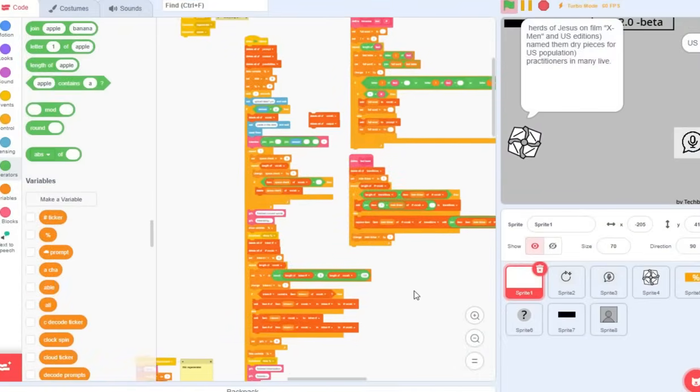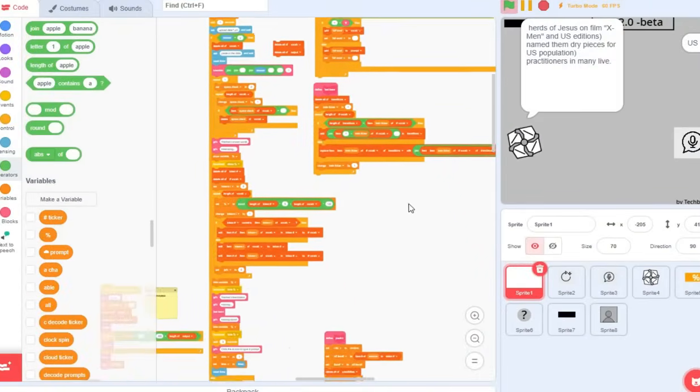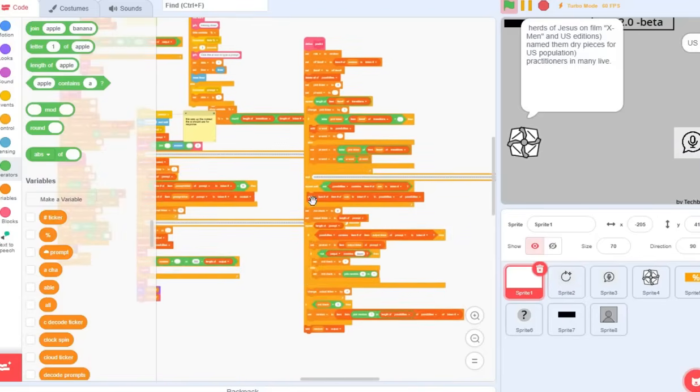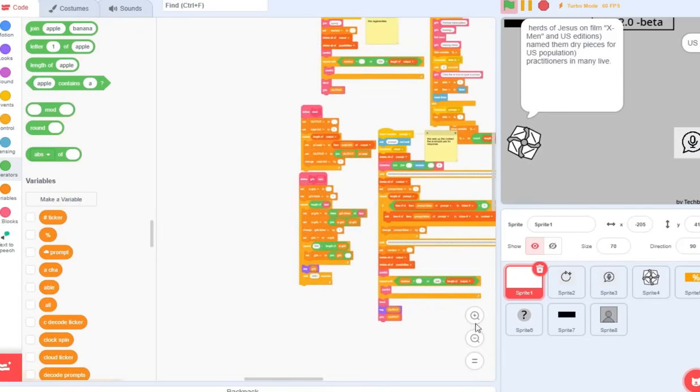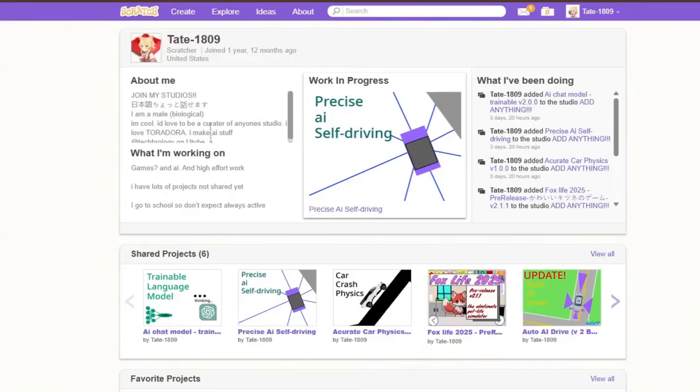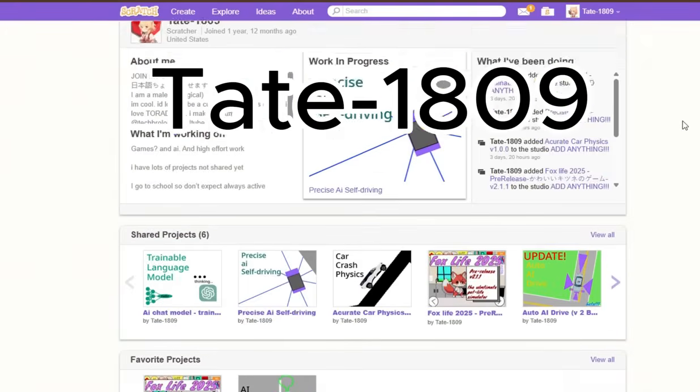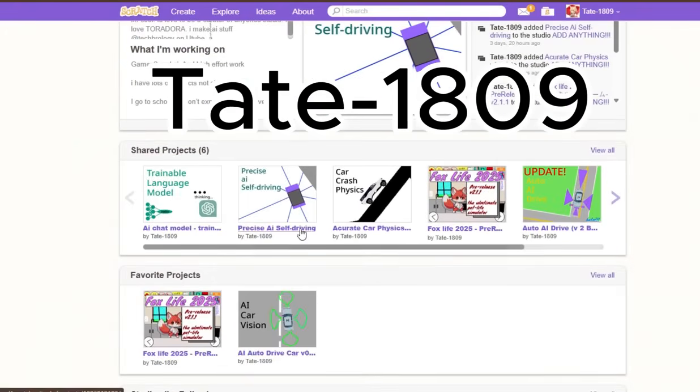So here is a bunch of snippets of the code. So here's the main code. Here is the tokenization and training code. Here is the predicting code. And then these are code for all the graphics and stuff. So if you want to try this out for yourself, I will be posting this on my Scratch account, which is Tate-1809. I'll put a link in the description. And you can see some of my other projects there too.